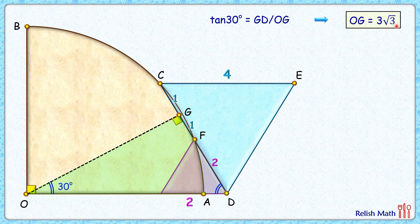Simplifying, we get OG length as 3 root 3 centimeters. So this length OG is 3 root 3 centimeters.